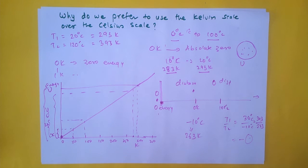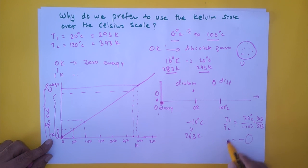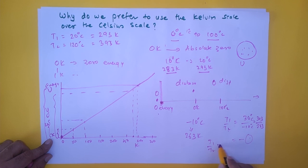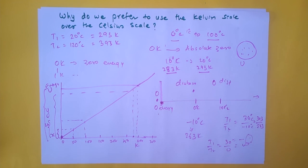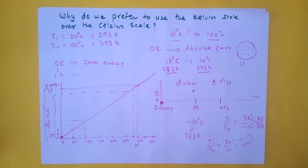The Kelvin scale also avoids division-by-zero problems. For example, if T2 = 0°C, then T1/T2 = 30/0, which is mathematically undefined (infinity). Converting to Kelvin eliminates this issue entirely. These are the reasons why we always prefer to use the Kelvin scale over the Celsius scale when dealing with thermodynamics.